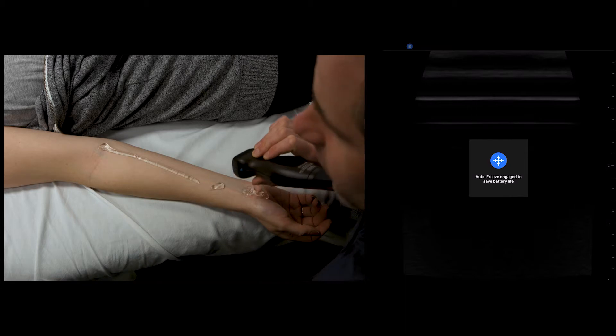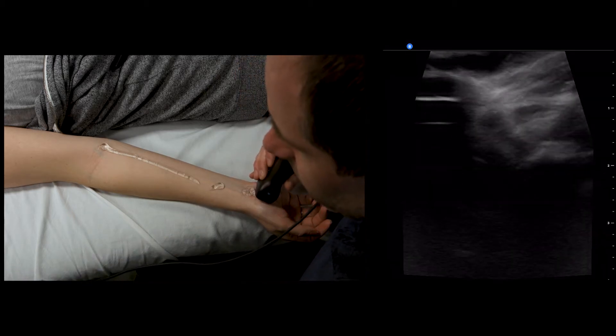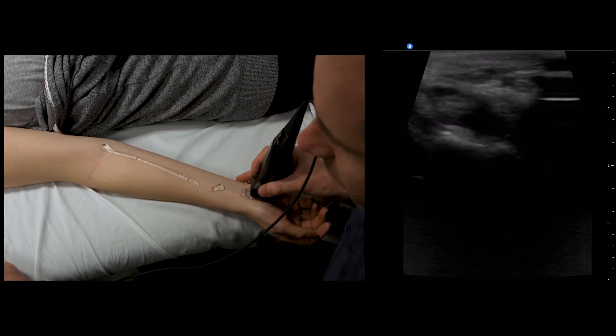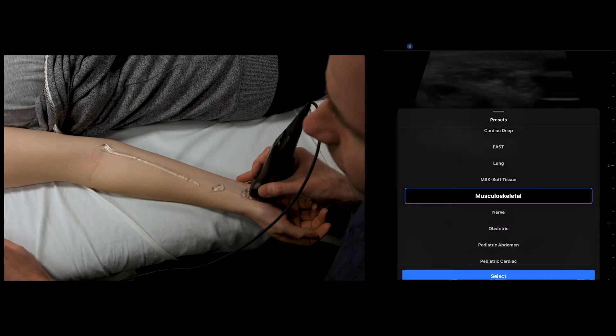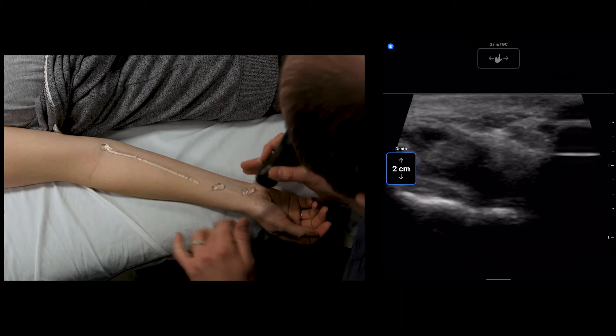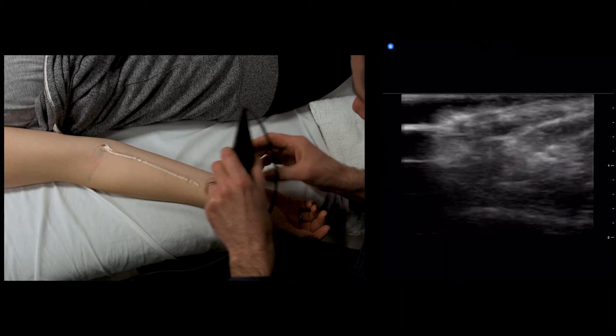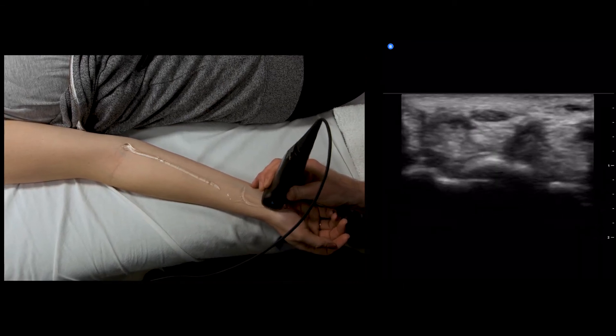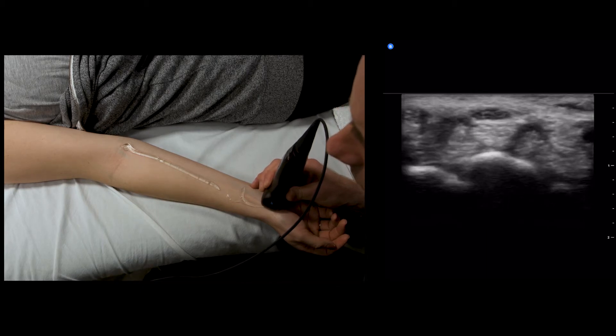Left is going to be on the left side of the screen. First thing we want to do is take our preset, go to a musculoskeletal preset, and decrease our depth a little bit. Here's the median nerve.